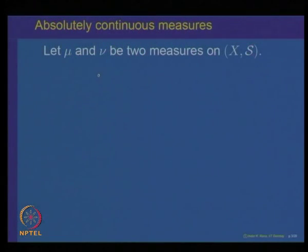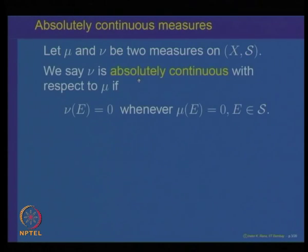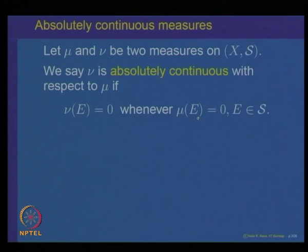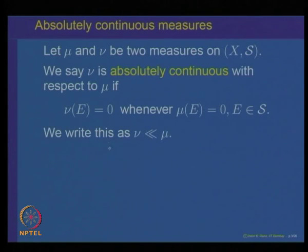Let us recall what absolutely continuous measures are. If two measures mu and nu are given on a measurable space (X, S), we say nu is absolutely continuous with respect to mu if for any set E in the sigma algebra S, mu of E equal to 0 implies nu of E equal to 0. That means if a set E has mu-measure 0, then the nu-measure of E is also 0. We write this relation using the symbol nu much less than mu.